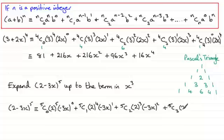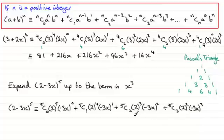That's going to be 5C3, then 2 to the power 2, and (−3x) to the power 3. There are going to be more terms in the complete series, but we've got to just do it up to x cubed, so just put plus, and so on.